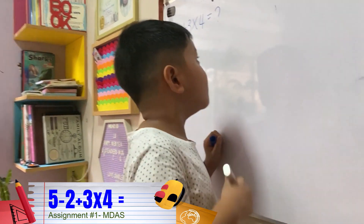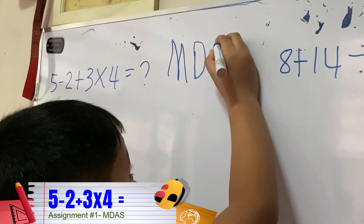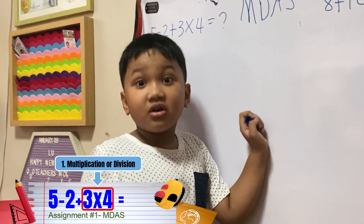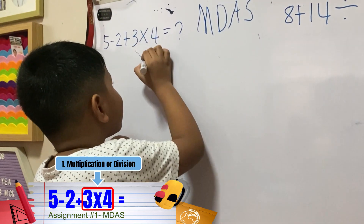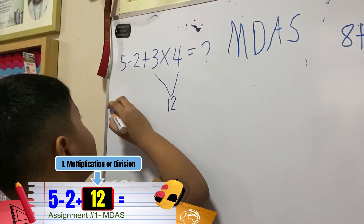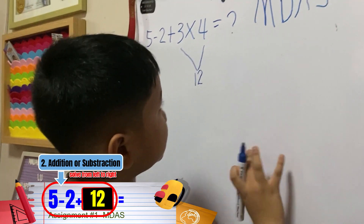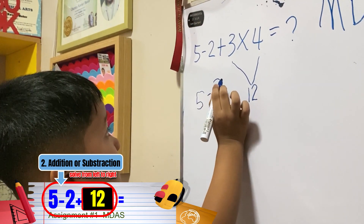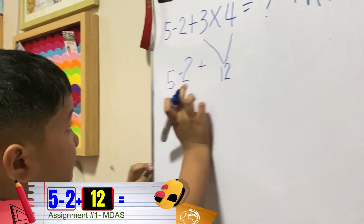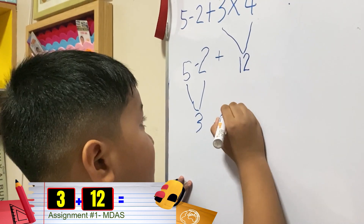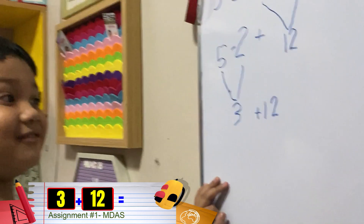Remember the endless rule? Let's answer it now. Following the endless rule, multiplication or division first. 3 times 4 equals 12. And next to solve this — let's bring down. 5 minus 2 plus 5 minus 2 equals 3. Plus 12 equals 15.